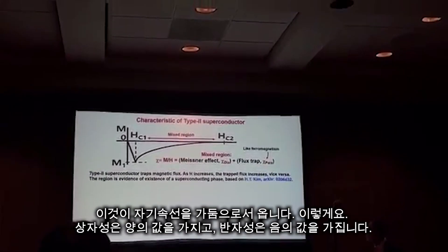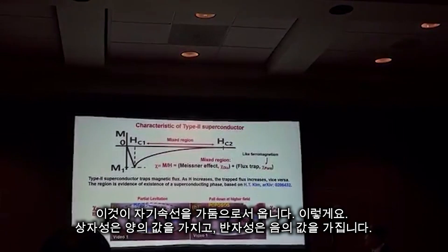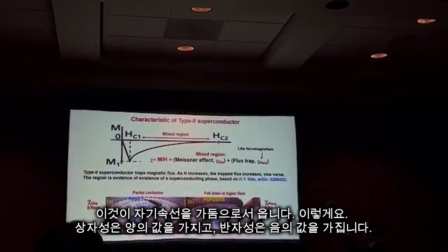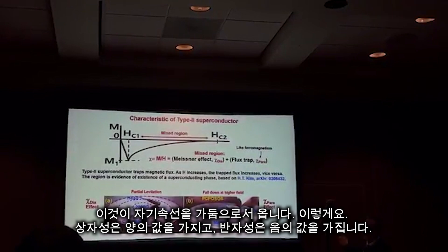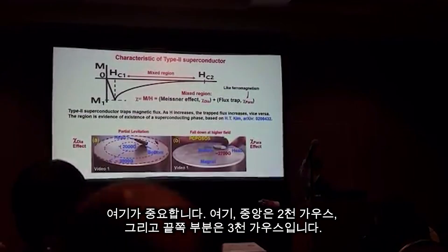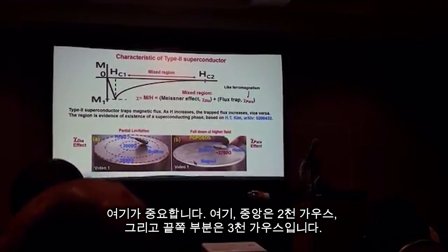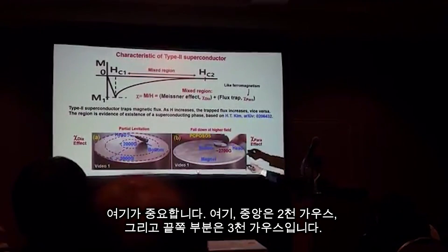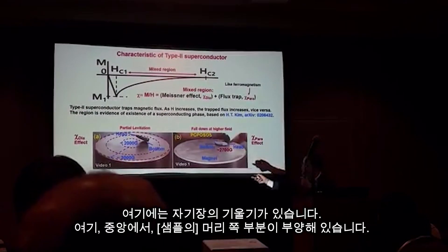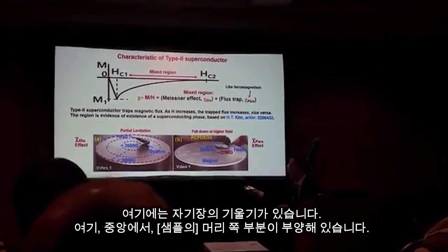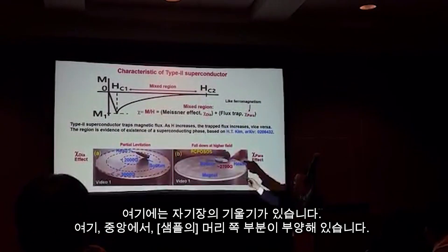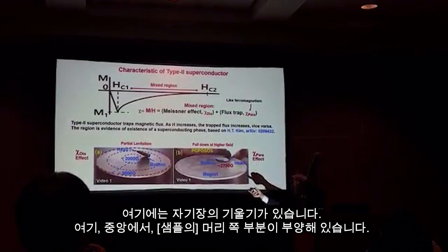Coming from the blocked to tracked behavior. Paramagnetic is a positive value. Diamagnetic is a negative value. Here, the center is 2,000 gauss, and the edge part is 3,000 gauss. There is a gradient of the magnet. Near the center, the head part of the sample is in a levitated state.